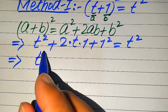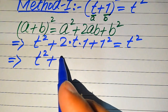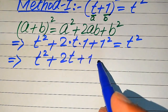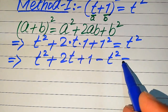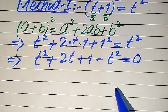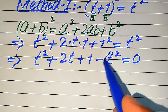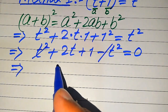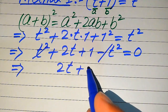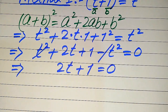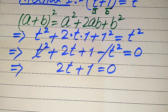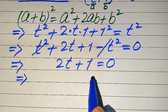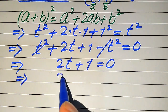In the next step we move t² to the left hand side, giving t² + 2t + 1 − t² = 0. The t² terms cancel out, and we get 2t + 1 = 0. Our target is to find the value of t, so we move the +1 to the right hand side, which gives 2t = −1.